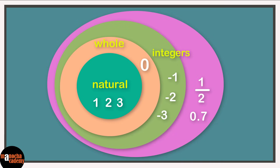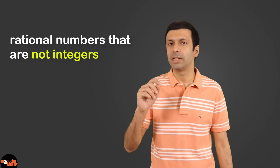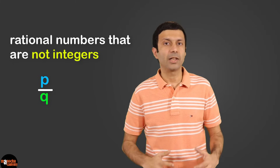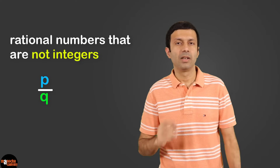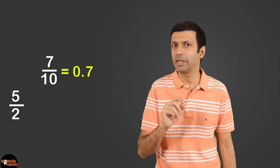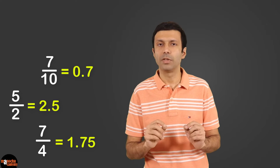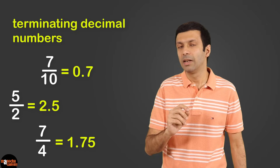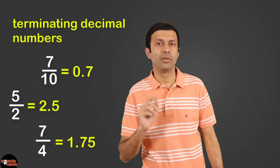Let's add the non-integers to our set diagram. The integers and non-integers — that is, fractions and decimals — together are called rational numbers. Now let's talk more about rational numbers that are not integers. Rational numbers are fractions represented by the P by Q form. You can calculate the fraction by dividing, and we end up with a decimal number. For example, 7 by 10 is 0.7, 5 by 2 is 2.5, 7 by 4 is 1.75. These are all examples of terminating decimal numbers — the decimal digits stop or terminate after a point, because on dividing by the denominator, the remainder is zero.